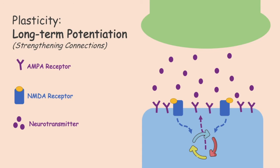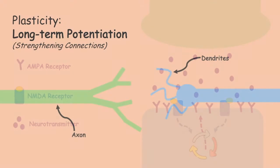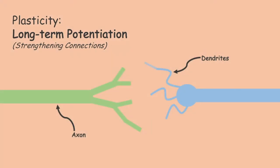At a structural level, there is an increase in the number of synaptic contacts between the neurons through dendritic and axonal branching. Altogether, this causes increased neuronal responses and can yield permanent modifications of brain function, lasting even years.